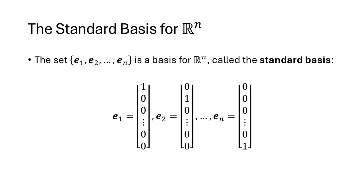One basis is a set of vectors that we've already seen. The vectors e1 through eN form a basis for R^n called the standard basis. e1 represents the vector with a 1 in its first entry and 0s everywhere else. e2 has a 1 in its second entry and 0s everywhere else, and so on.